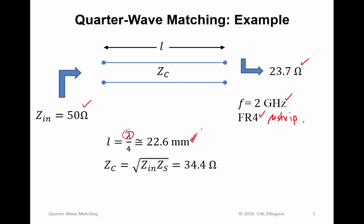Z sub C is given by the square root of the desired input impedance and the terminating impedance. And I guess that should really be Z sub L. But I think you know what I mean. The square root of the product of those two things is 34.4 ohms. So that's the characteristic impedance of the transmission line.